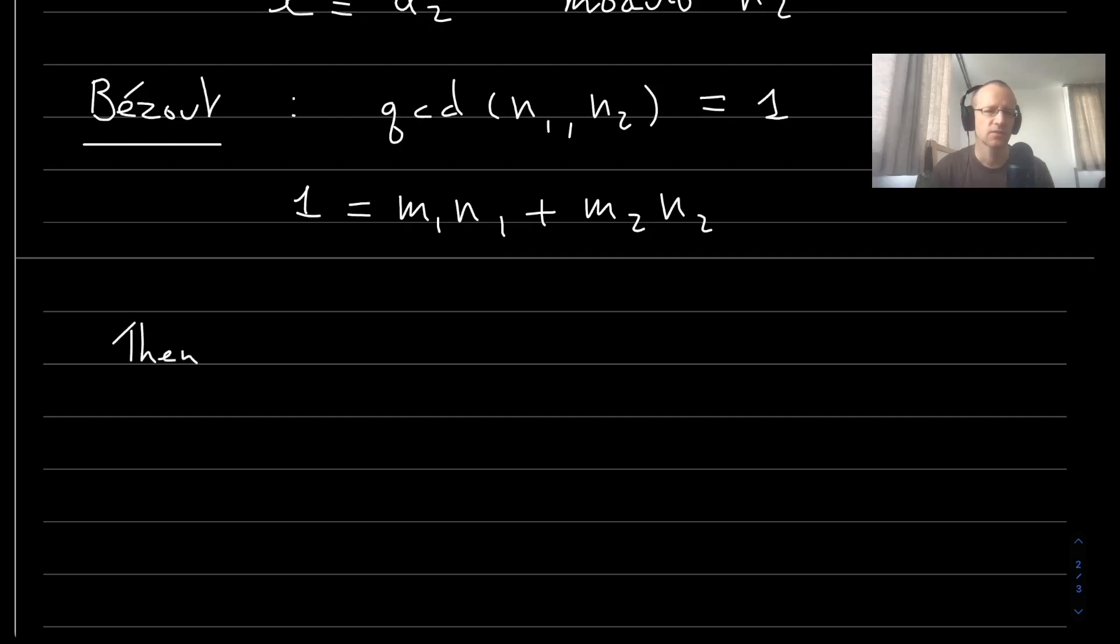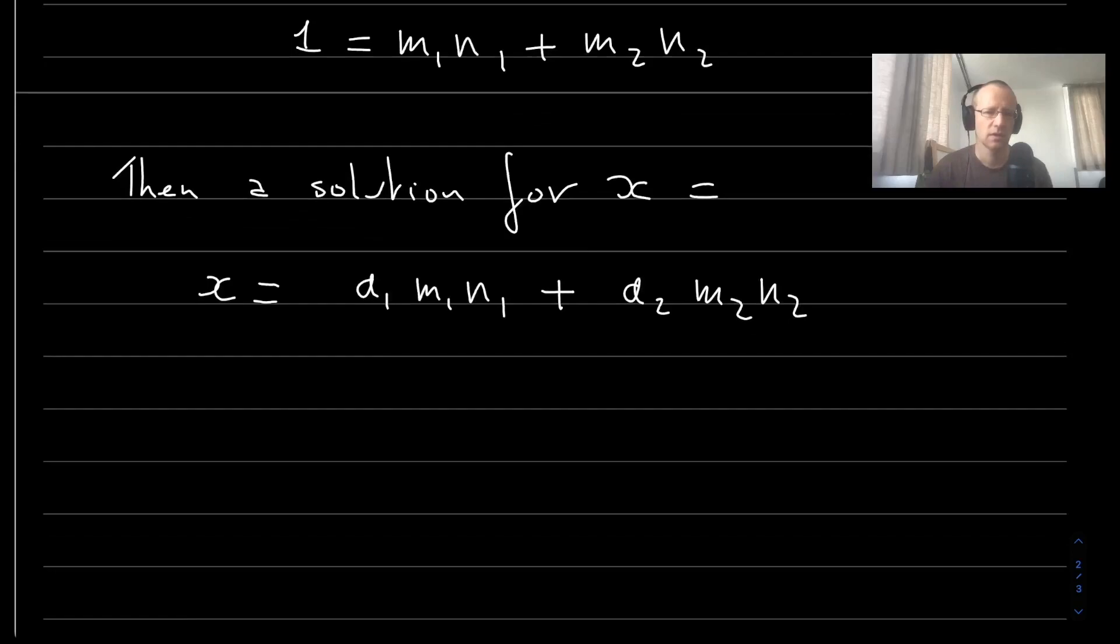And then a solution for x equals a_1 m_1 n_1 plus a_1. So this is a solution, and if this is a solution, it is fairly obvious that any multiple of n added to x is also a solution.